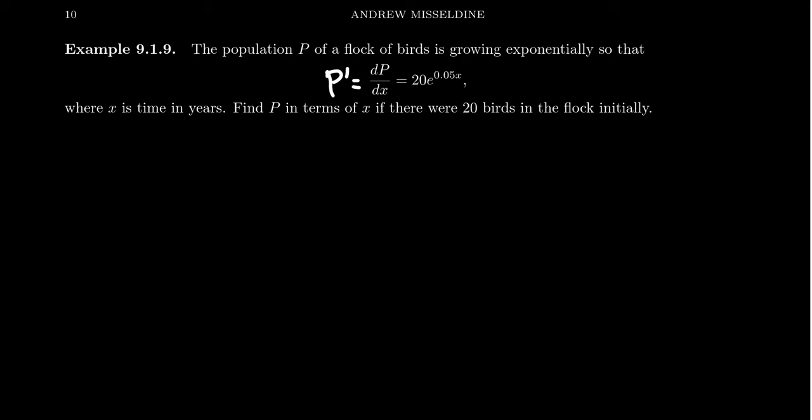We know a relationship on how the population is growing over time. We have an initial observation and want to find an equation to model the population at any given time. We know that P' = 20e^(0.05x).